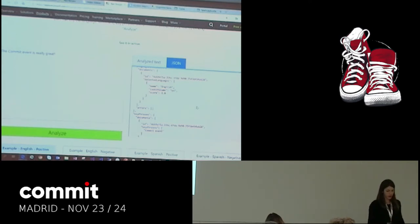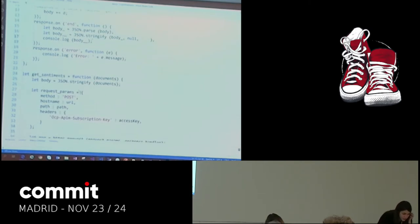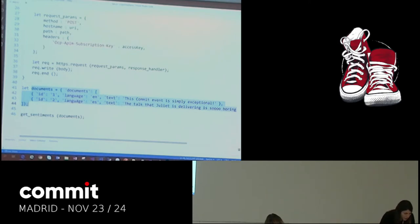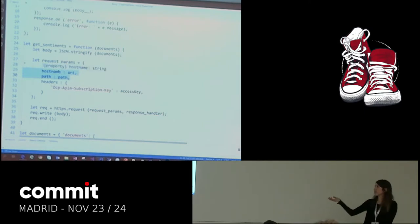These demo portals are cool, but what if you want to use them in your project or code? I'm going to show you how to call these APIs. Starting with JavaScript — I declare documents containing two phrases: the first is positive, 'This commitment is exceptional,' and the second is negative, 'This talk is really bad.' I call a function, get sentiments, which sends an HTTPS request. In the headers I add the URL or path to the endpoint, and in the header I add an access key — basically an ID you get when you sign up for one of these services.